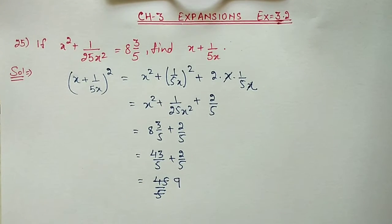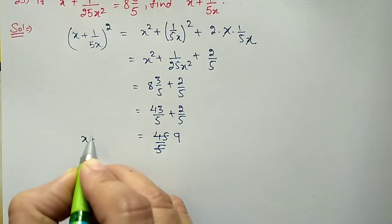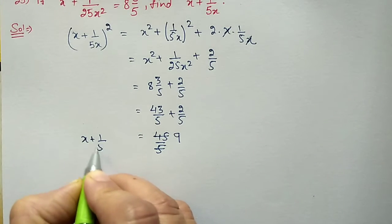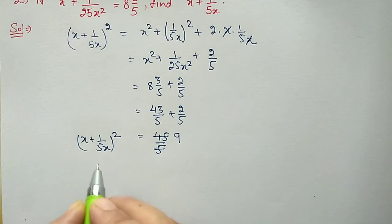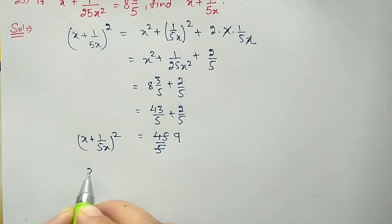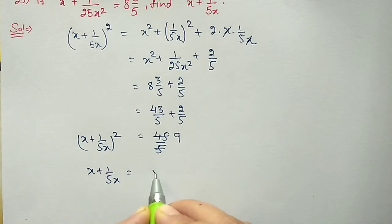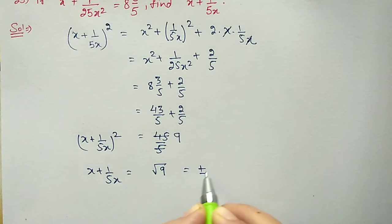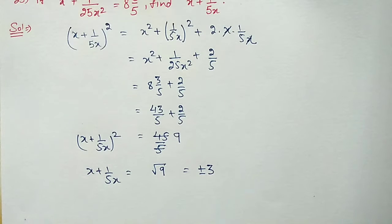So 45/5 simplifies to 9. We have (x + 1/5x)² = 9, so x + 1/5x = √9 = ±3. For +3 and for −3, squaring both gives 9.